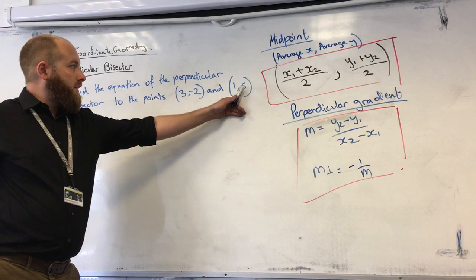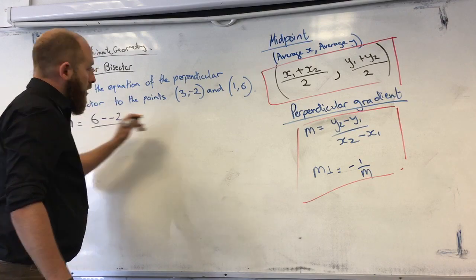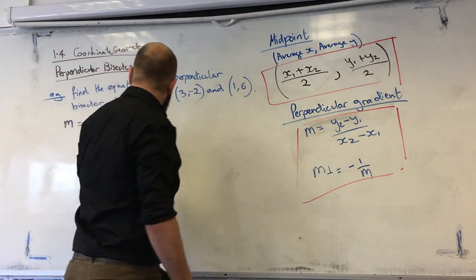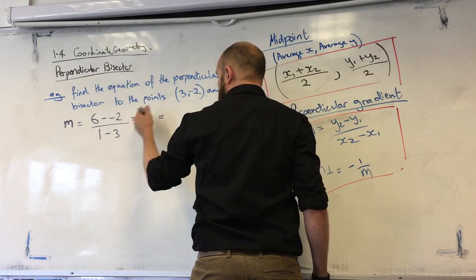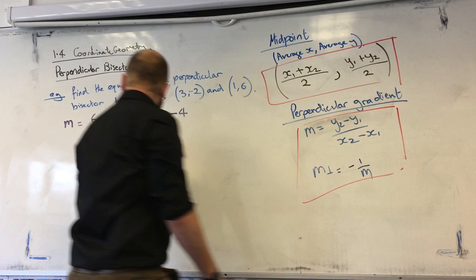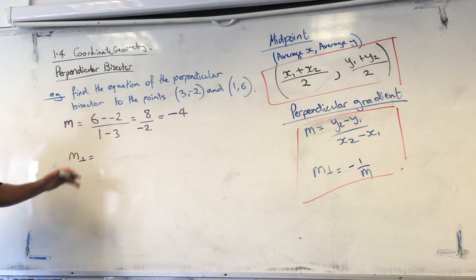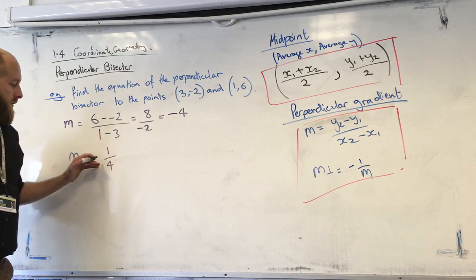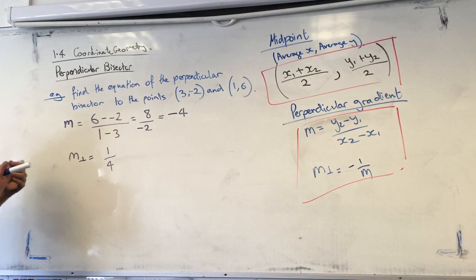So the gradient of the line joining these two points. Difference in y. So 6 take minus 2 over 1 minus 3. Which is 8 over minus 2. 8 divided by 2 is 4. So we get minus 4. So our perpendicular gradient is going to be the negative reciprocal. Reciprocal of 4 is a quarter. Negative, so it's going to be plus a quarter. So that's our gradient.